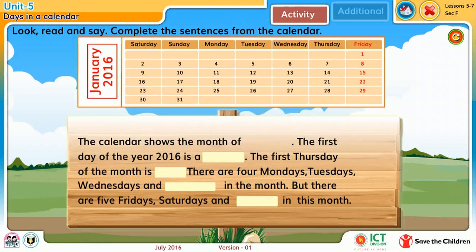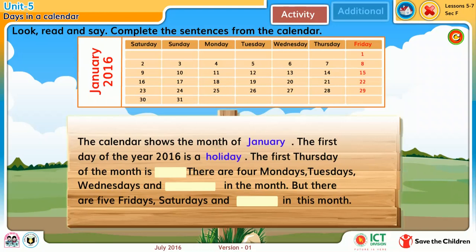The calendar shows the month of January. The first day of the year 2016 is a holiday. The first Thursday of the month is 7.